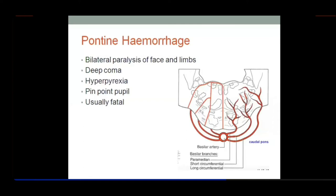Remember that the sympathetic outflow originates from T1 to L2 segments of the spinal cord as preganglionic fibers from the lateral horn. The upper motor neurons of this autonomic pathway descend from the hypothalamus to the lateral horns. With a lesion in the pons, the sympathetic pathway is interrupted. The sympathetic fibers control the dilator pupillae, while the constrictor pupillae is controlled by parasympathetic outflow via the Edinger-Westphal nucleus.